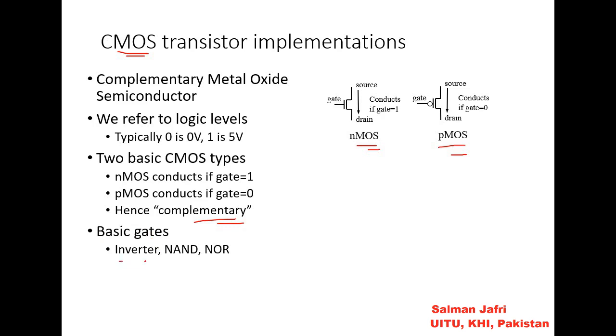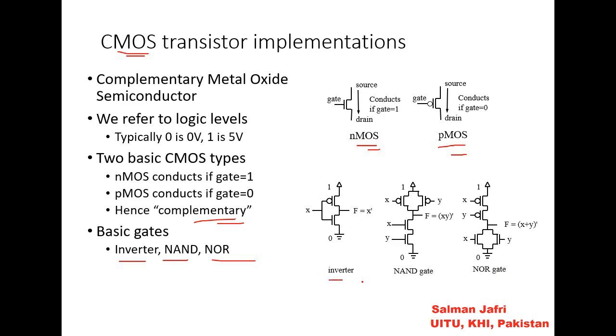Now we have the basic gates which is the inverter, NAND, or NOR gates. This symbol is the inverter, then we can have the NAND gate, but the output would be the NAND of the inputs. We can have the NOR gate. The basic implementations of inverter, NAND, and NOR gate can all be implemented using these CMOS transistors.